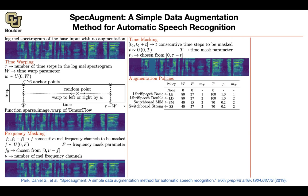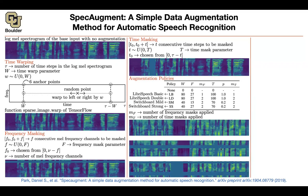These are your datasets: LibriSpeech basic, LibriSpeech double, Switchboard mild, Switchboard strong. You can apply different types of masking on them. W is for warping, F is the hyperparameter for frequency masking, tau is for time masking, MF is the number of frequency masks to apply, and MT is the number of time masks to apply, along with a probability of doing that mask or not. In the end you get figures showing the augmentations applied to your data — you can do multiple of them.